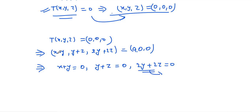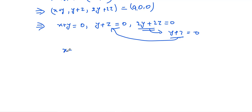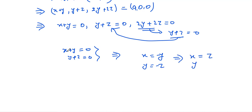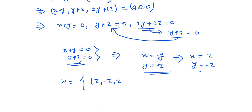The third equation 2y + 2z = 0 simplifies to y + z = 0, which is the same as the second equation. Solving the two independent equations x + y = 0 and y + z = 0, we get x = −y and y = −z, which implies x = z and y = −z. Forming the solution set W, with z as a free variable: W = {(z, −z, z) : z ∈ ℝ}.